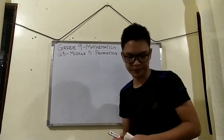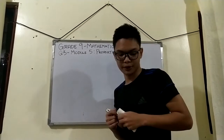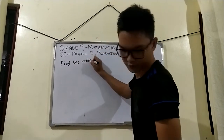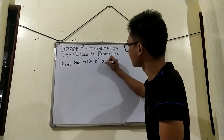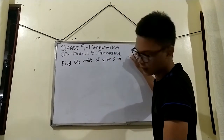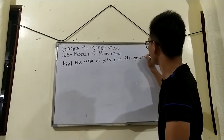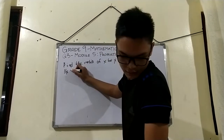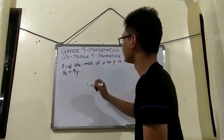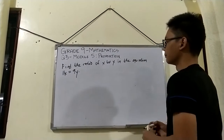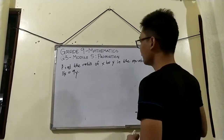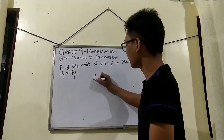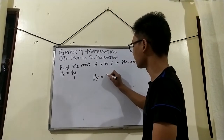The topic is Proportion. Our first problem is: find the ratio of x to y in the equation 11x is equal to 9y. To find the ratio of x to y, we will first rewrite the equation: 11x is equal to 9y.